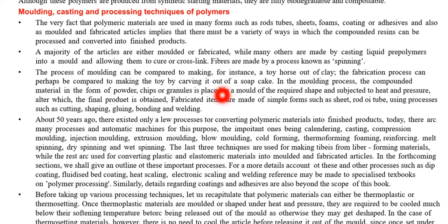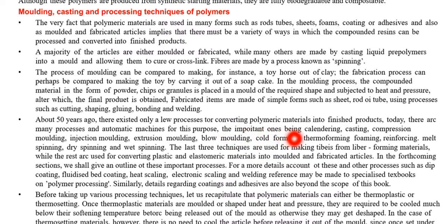Some important processes to be discussed include calendaring, casting, compression molding, injection molding, extrusion molding, blow molding, cold forming, thermoforming, foaming, reinforcement, melt spinning, dry spinning, and wet spinning, which have already been discussed.